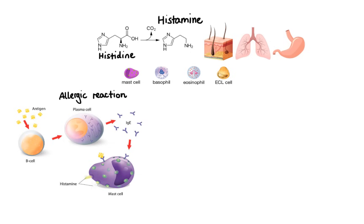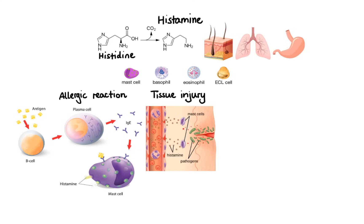The second condition which triggers histamine release is tissue injury. When tissue injury occurs, the damaged mast cells release chemical mediators, among them histamine, which affect blood vessels and nerves in the damaged area.